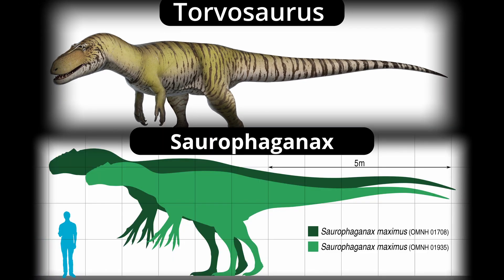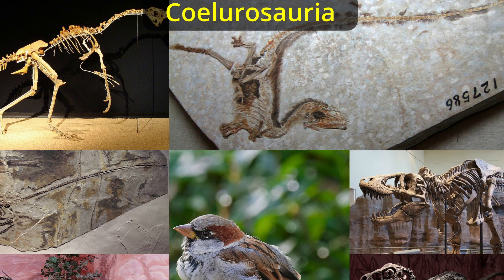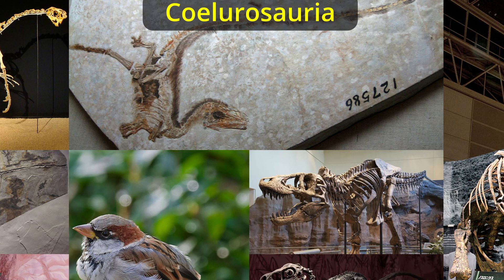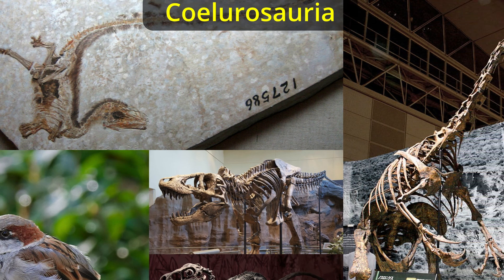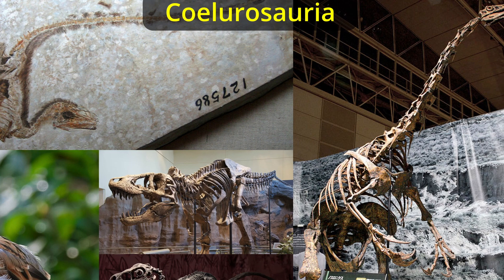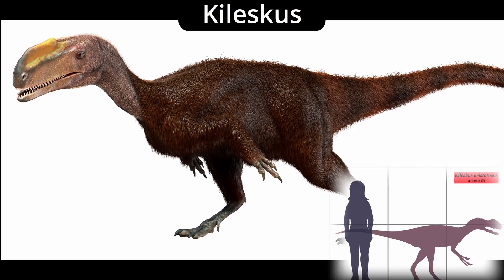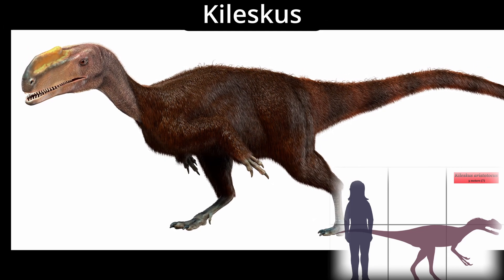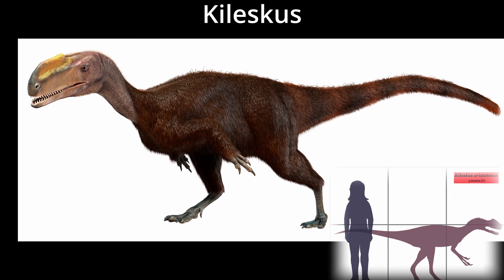The middle Jurassic saw the first definitive members of the clade Cilurosoria — the clade containing all theropod dinosaurs more closely related to birds than the carnosaurs. Within Cilurosoria is the only clade of dinosaurs to make it till today: Manoraptora. Cilurosoria may have picked up as early as the late Triassic, but the earliest unambiguous claims come from the middle Jurassic: Proceratoceros and Chalescus.